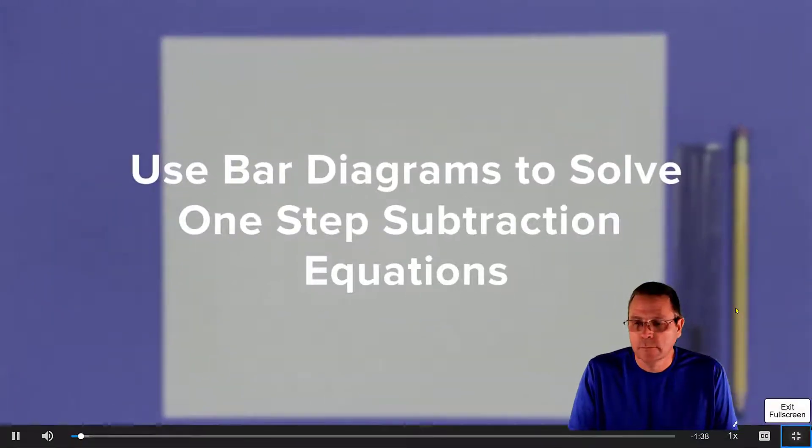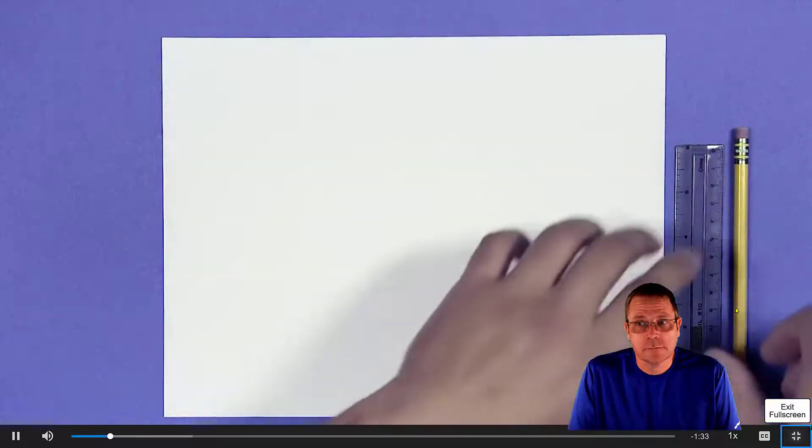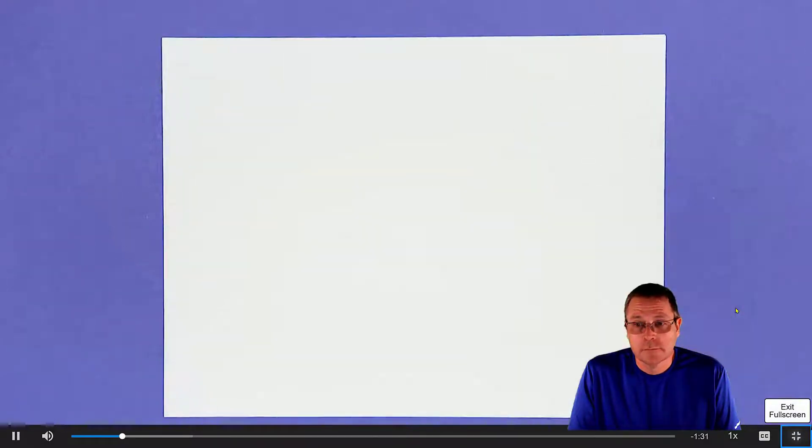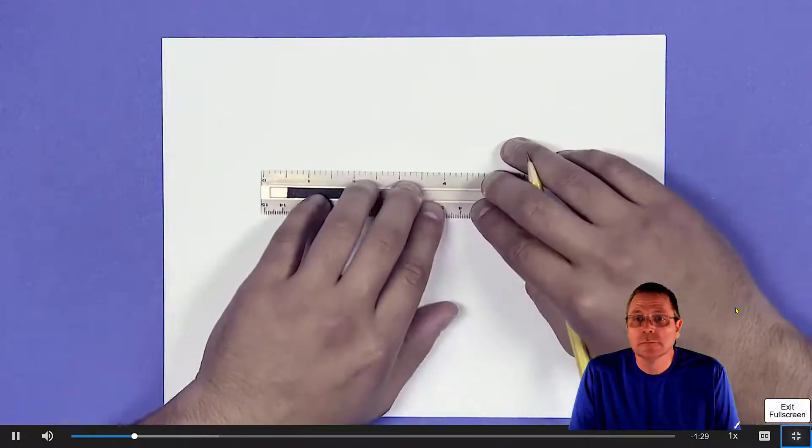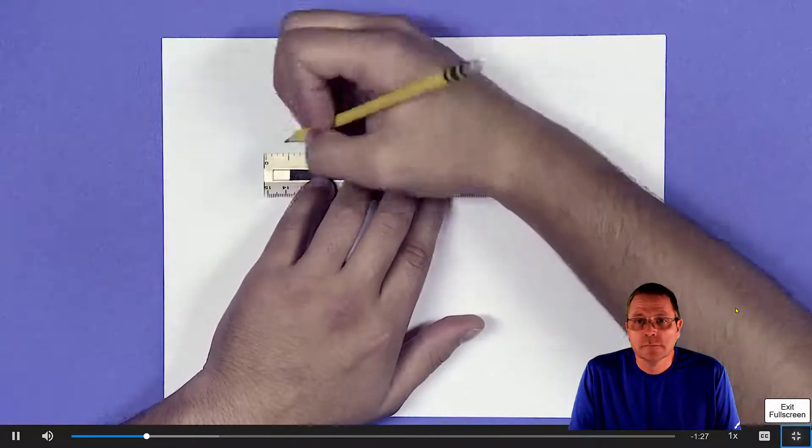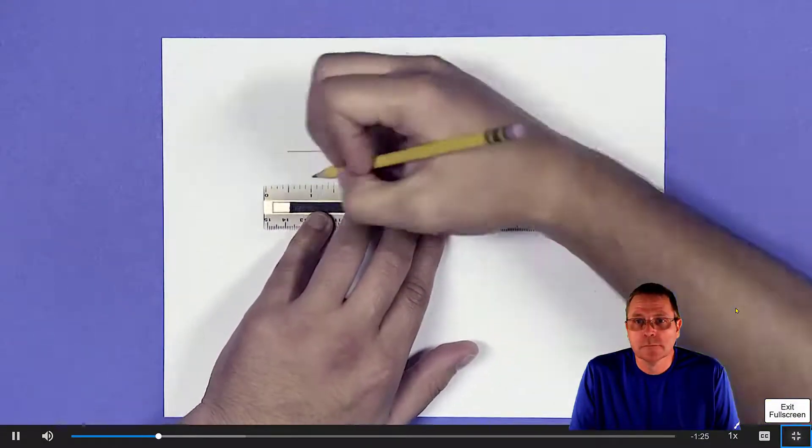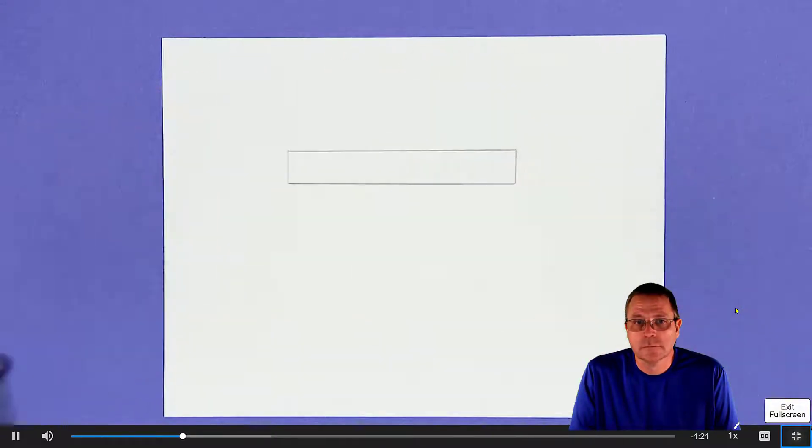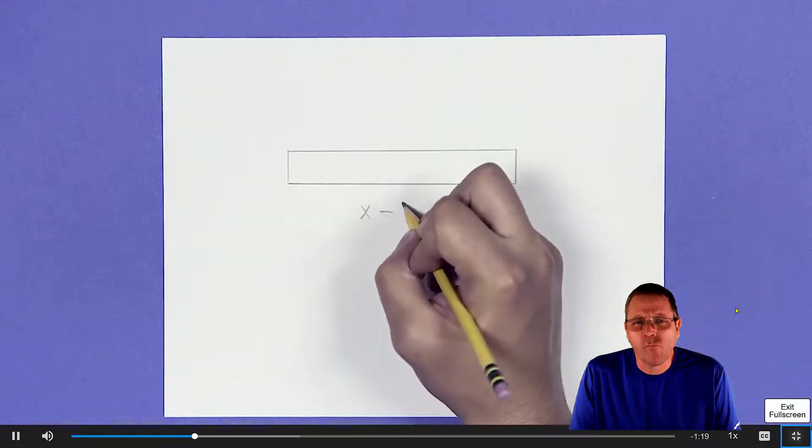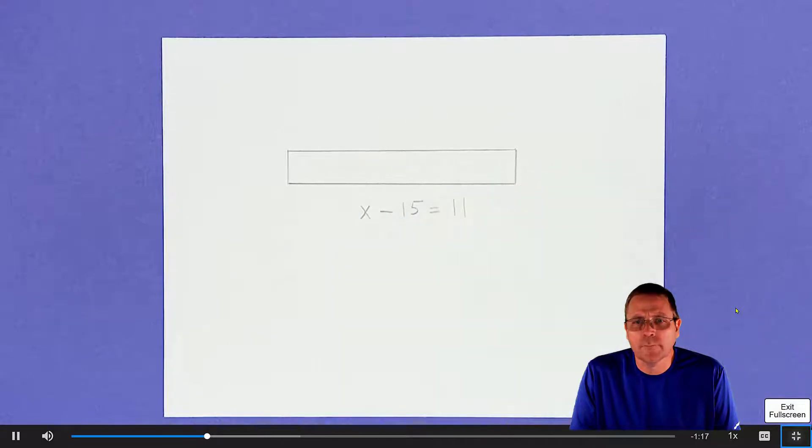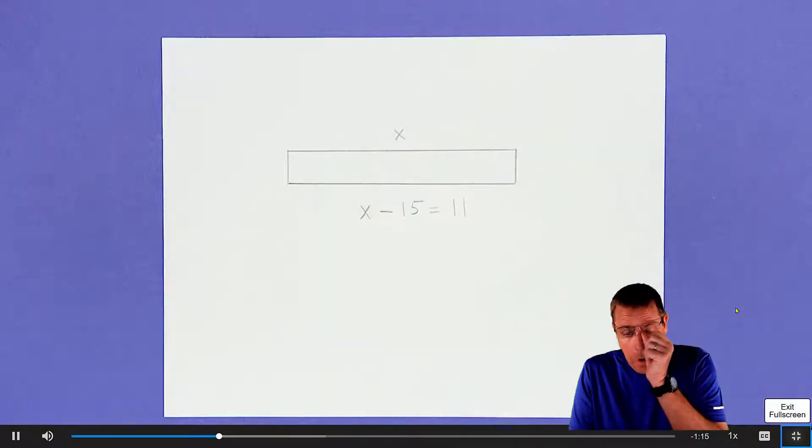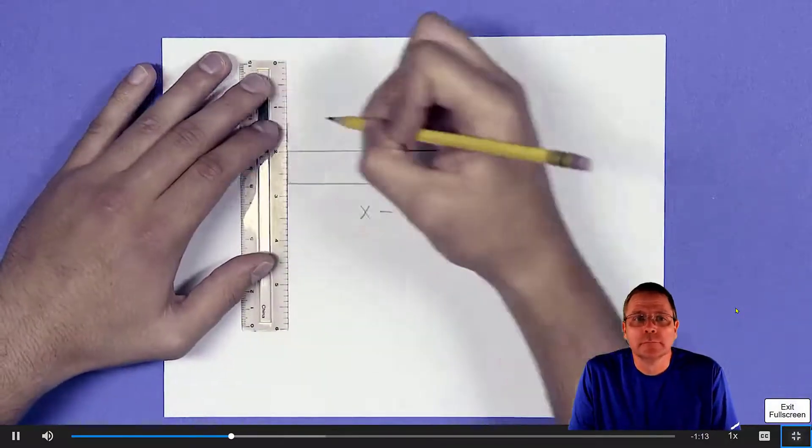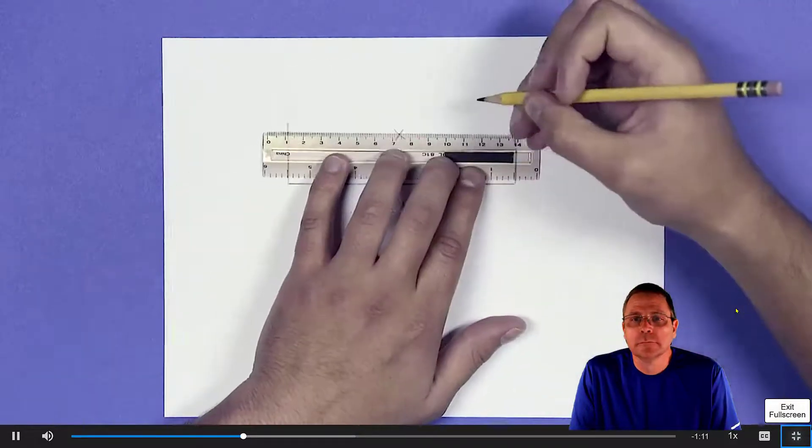Use bar diagrams to solve one-step subtraction equations. Use a bar diagram to solve x minus 15 equals 11. Draw a bar to represent the total. The total length of the diagram represents the original amount, x.